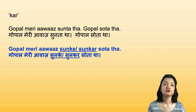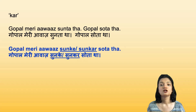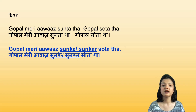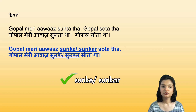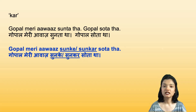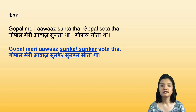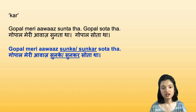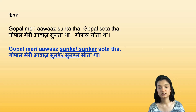Now combining the same habitual past sentence using kar/ke. 'Gopal meri awaz sunke sota tha' — or — 'Gopal meri awaz sunkar sota tha.' The verb is sunna (to listen), whose root verb is sun. You can add both ke and kar to sun: sunke is the colloquial spoken form, sunkar is the formal form used in both spoken and written Hindi. It means: he would sleep after listening to my voice.